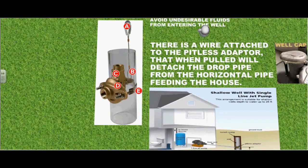Here is an illustration of the pitless adapter with a shallow well pump. There is a wire attached to the pitless adapter that when pulled will detach the drop pipe from the horizontal pipe feeding the house.